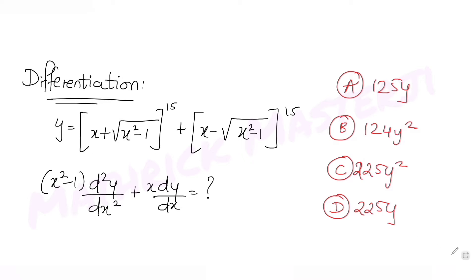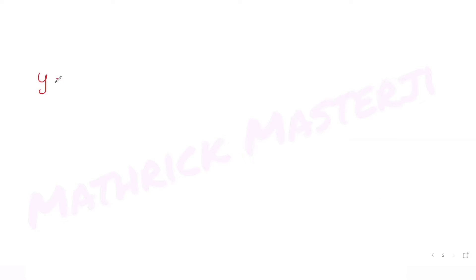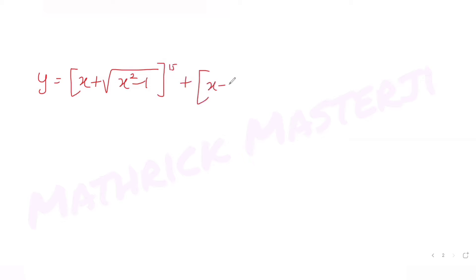So we have the expression: y = (x + √(x²-1))^15 + (x - √(x²-1))^15. We'll differentiate this entire expression with respect to x.